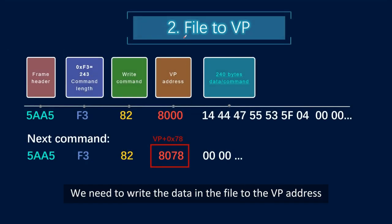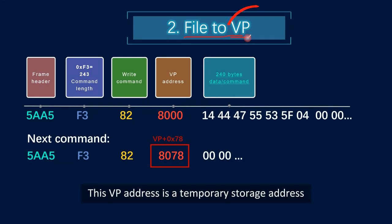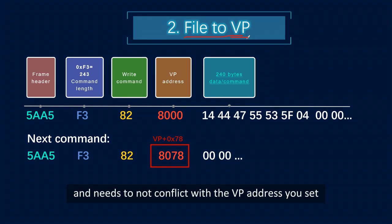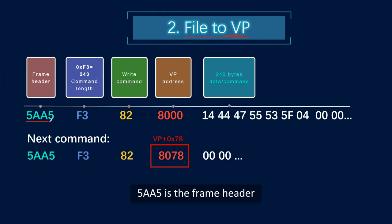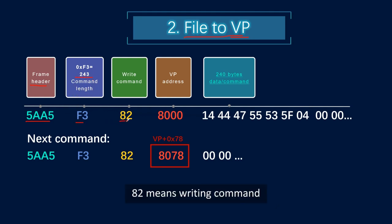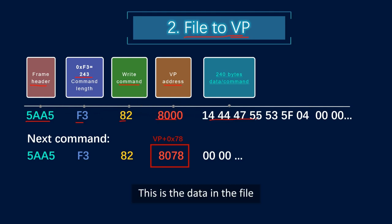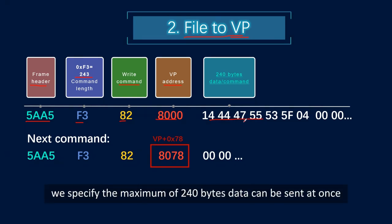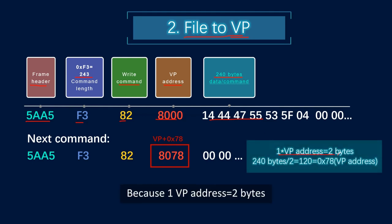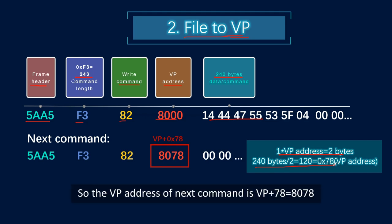In the second step, we need to write the data in the file to the VP address. This VP address is a temporary storage address and must not conflict with the VP address you have set. Look at this command: 5AA5 is the frame header, 0xF3 (243) is the command length, 82 means writing command, and 8000 is the VP address. For ease of calculation, we specify a maximum of 240 bytes of data sent at once. Because one VP address equals two bytes, 240 ÷ 2 = 120 = 0x78, so the VP address of the next command is VP + 0x78 = 8078.